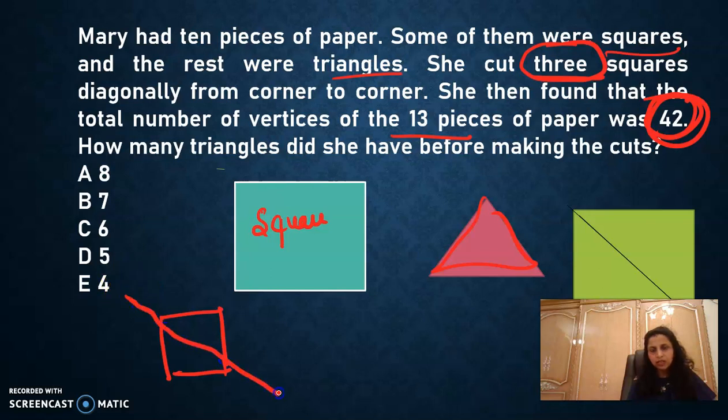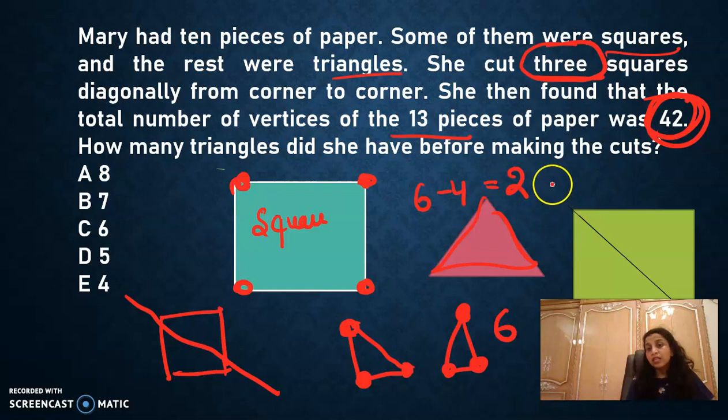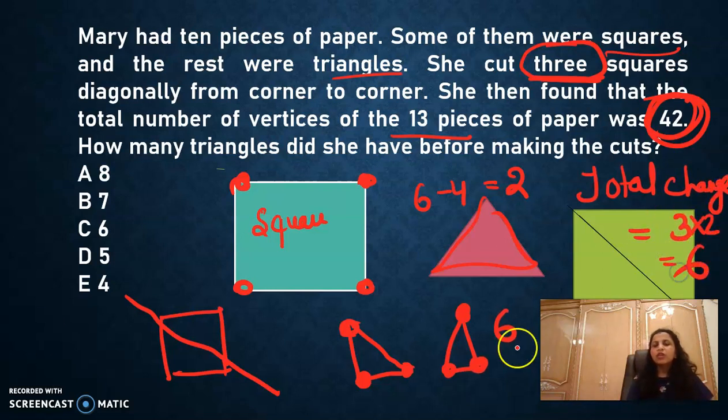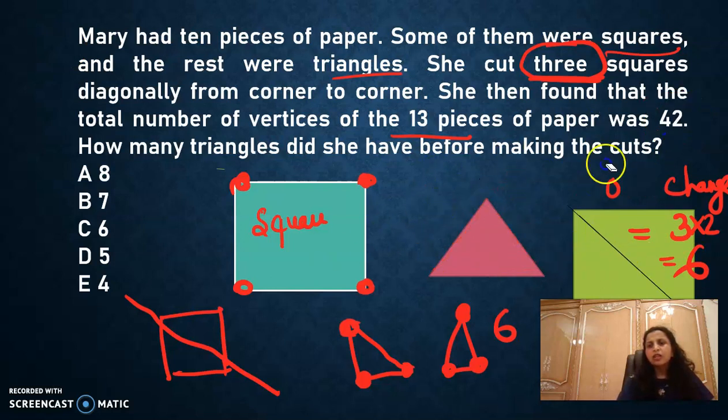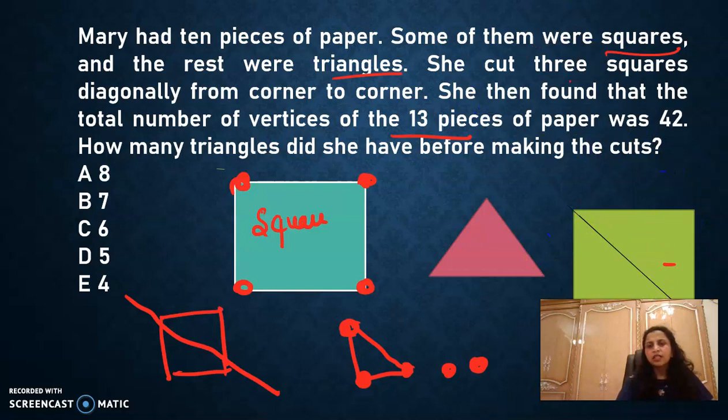So just you see when you cut the square diagonally. So what is happening to the vertices? So you can see my vertices are increasing. See how many vertices this has? Three, four, five, six. So now new figure has six vertices and this one is having four vertices. So what is the net change after cutting? Six minus four. That is two. And in each square, how much will be the change? Two. And how many squares are cut? See, three squares are cut. So total change is how much? Three into two. That is six. So can we say it like my initial number of vertices will be 36? Because 42 minus six, that will be my initial vertices, right?